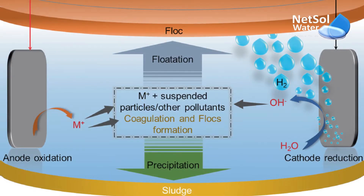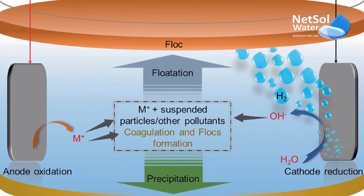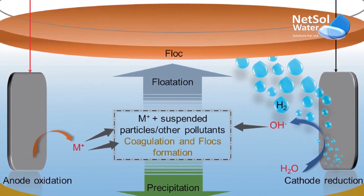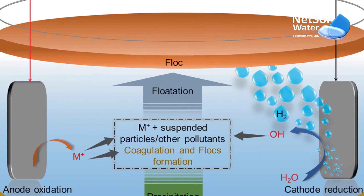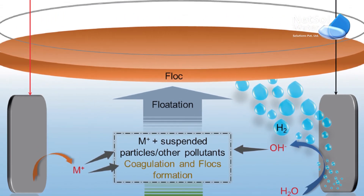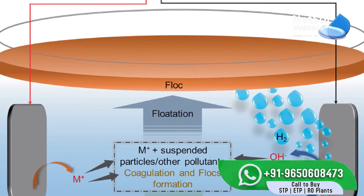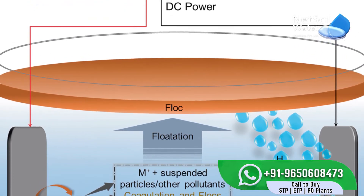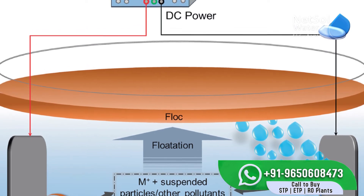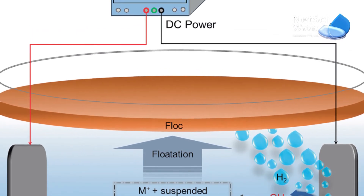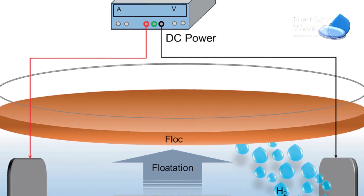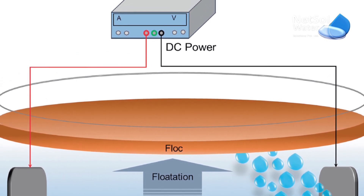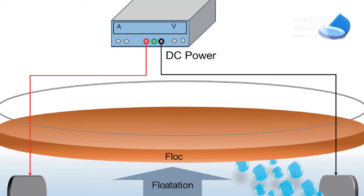The second stage is destabilization of contaminants, emulsions, and particulates. In this stage, the ions produced by the sacrificial electrode's oxidation interact to compress the diffuse double layers surrounding charged contaminating species. Ions created by the dissolution of the sacrificial electrode neutralize the ionic species in wastewater, reducing electrostatic inter-particle repulsion. When this repulsion is reduced, Van der Waals attraction takes over and causes coagulation.